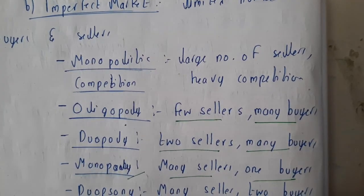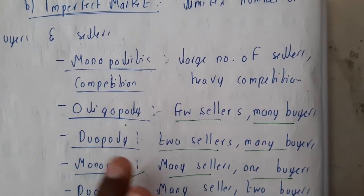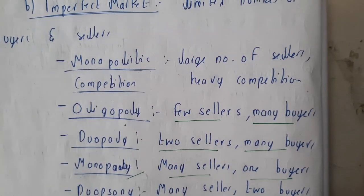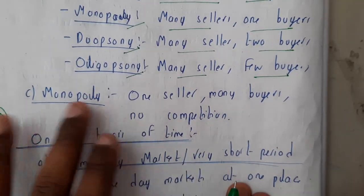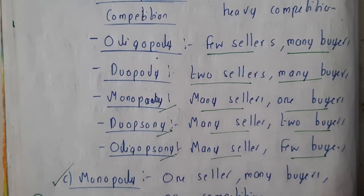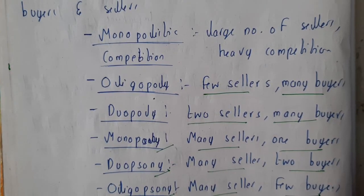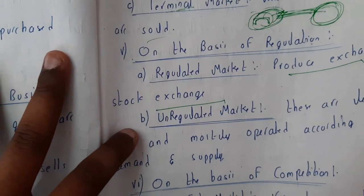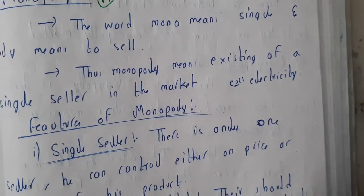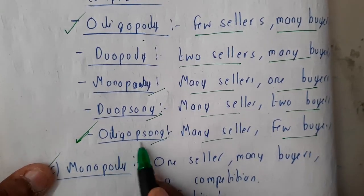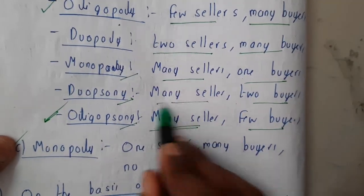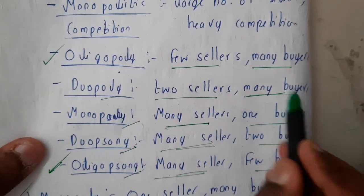In imperfect markets the number of sellers and buyers are not at maximum — there are limitations like one seller or one buyer. Monopoly is nothing but one seller and many buyers, and here there will be no chance of competition. In further lectures we'll be discussing perfect competition market, monopoly, and oligopoly. Remember: 'poly' means the maximum buyers, and 'sony' means the maximum sellers.